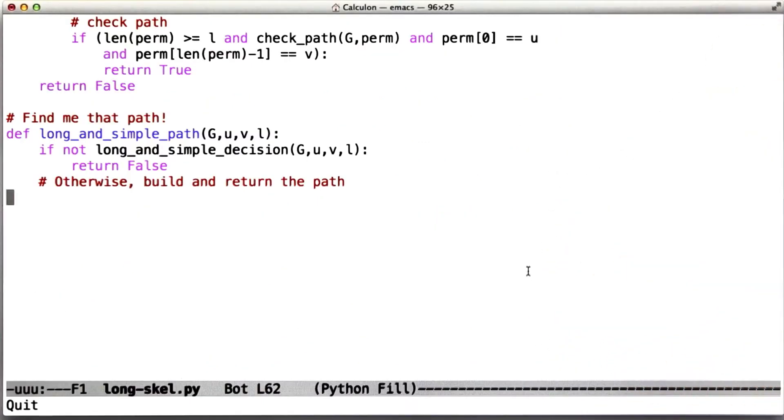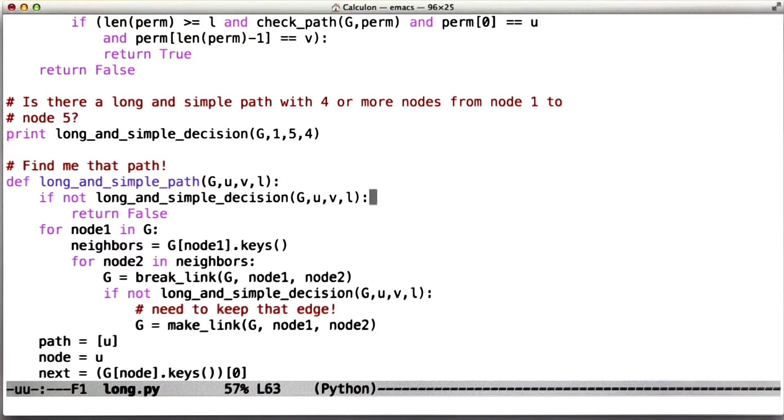So here is my attempt at that as Python code. We check first to make sure that there really is such a path, and if there isn't, then we just quit before we try to find it. But if there is, so somewhere in there the path exists, what we're going to do is run through all the edges.